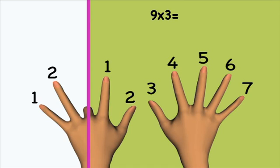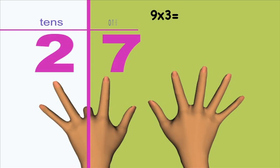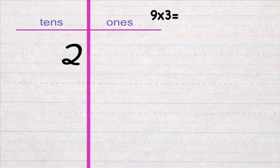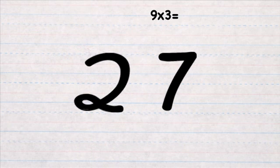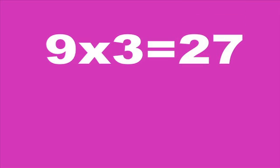Right. So, there's two on the left side of your folded finger. Those are the tens column. And seven on the right side of your folded finger. Those are the ones column. So, you write your answer like this. Put a two in the tens column and a seven in the ones column. And you get 27. See? Nine times three is 27.